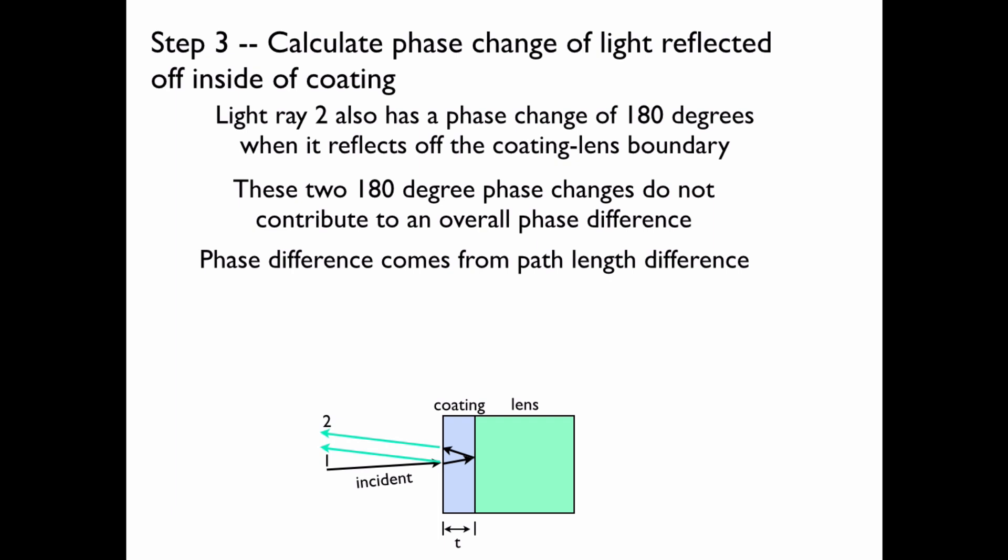Light ray 2 has to travel farther because it goes inside of the coating and then bounces back outside of the coating. The path length difference is just 2t. It's twice the thickness of the coating because it goes in and then bounces out. And we want to set this equal to the wavelength of the light inside of the coating. And when light is inside of media with different indices of refraction, its wavelength changes. And it changes by being divided by n so that lambda inside the coating is actually lambda over n where lambda is the wavelength outside of the coating in air.